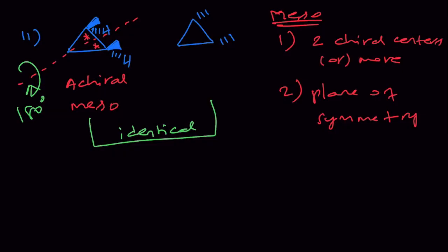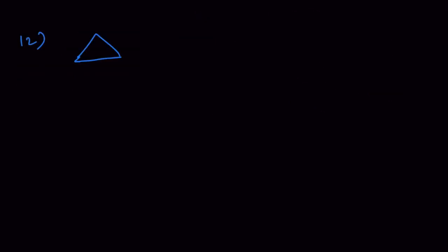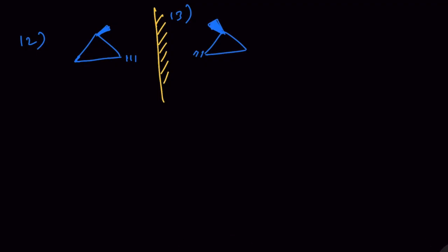Isomers 12 and 13: we keep one methyl group up and one methyl group down. The mirror image gives another isomer because no matter how you rotate these two molecules, you cannot superimpose them. These two are enantiomers. In total, we can write 13 isomers for C5H10.